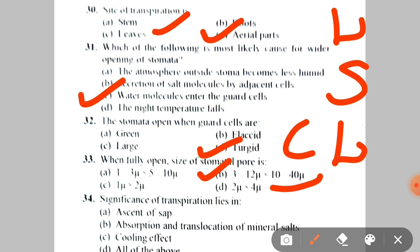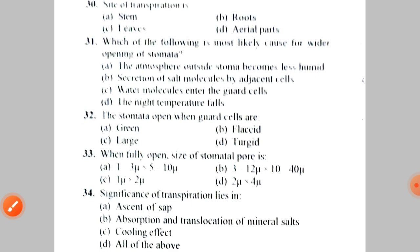Next question: the significance of transpiration lies in A. Ascent of sap, B. Absorption and translocation of mineral salts, C. Cooling effect, D. All of the above. The correct answer is D — all of the above, as ascent of sap, absorption and translocation of mineral salts, and cooling effect are all three significances of transpiration.